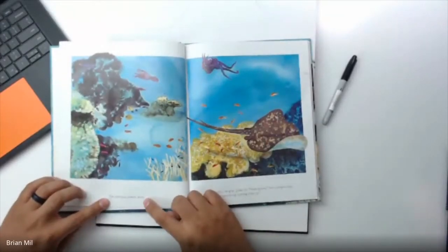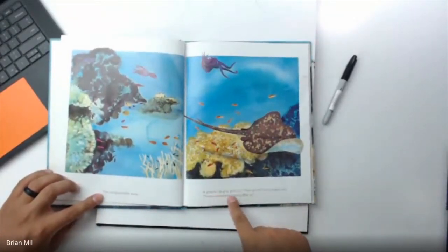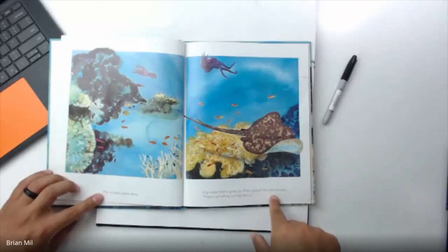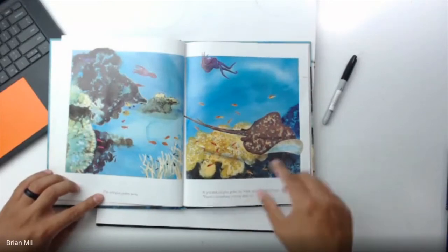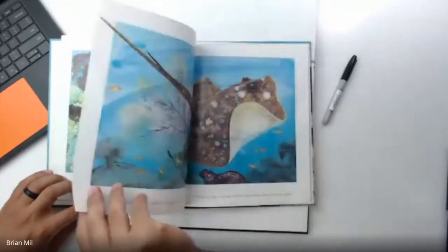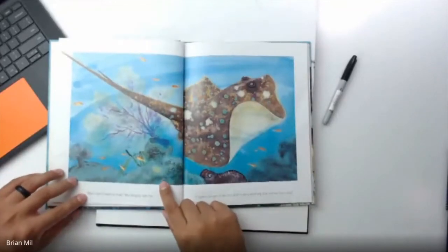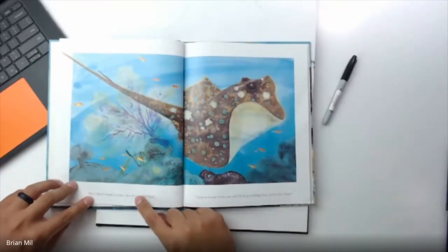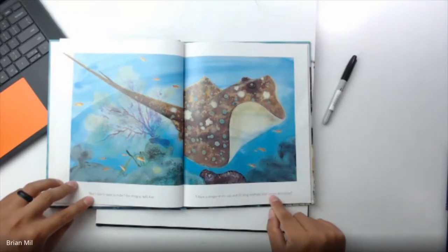The octopus swims away. A graceful stingray glides by. Hide quickly, the octopus says, there's something coming after us. But I don't need to hide, the stingray tells her. I have a stinger on my tail and I'll sting anything that comes too close.